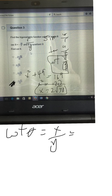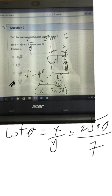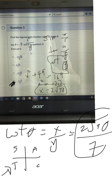x is 2 root 30 over y is 7. Now they say it's in quadrant 3, and quadrant 3 according to the CAST rule - quadrant 3 is positive for tangent and cotangent. So it'll be a positive 2 root 30 over 7. That answer is right there.